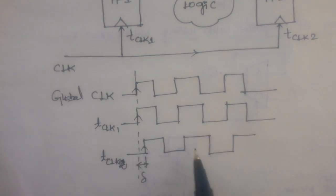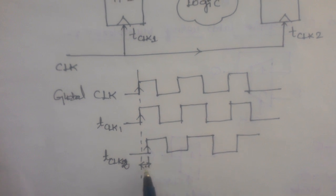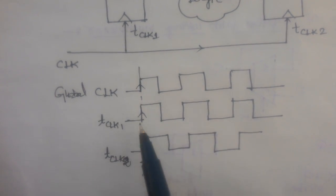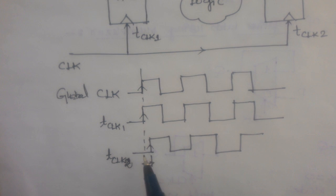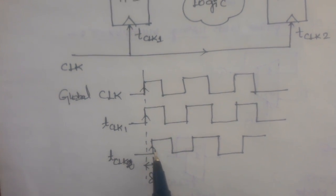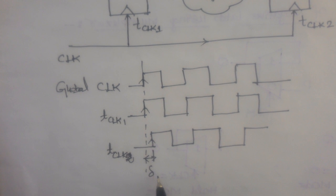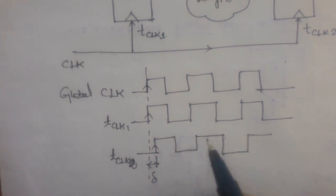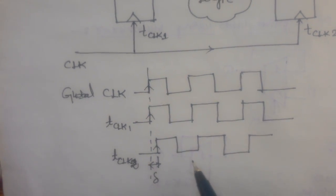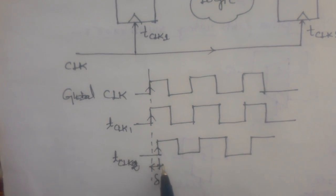At flip-flop 2, I am receiving the same clock edge after some time delay with reference to the main clock signal. I am receiving the same positive trigger, but later — this difference is represented as clock skew. Therefore, the variation in the arrival time of the clock transition is known as clock skew.